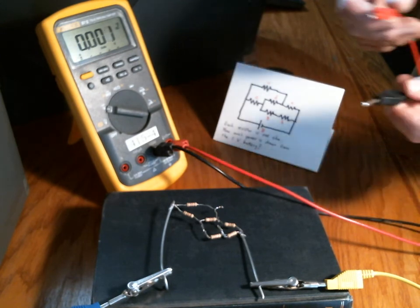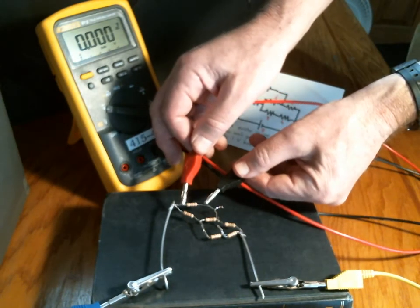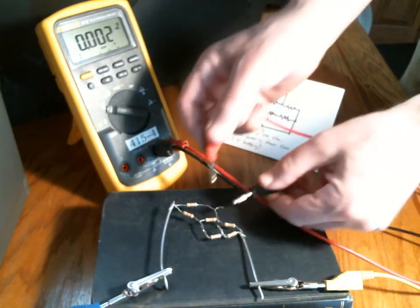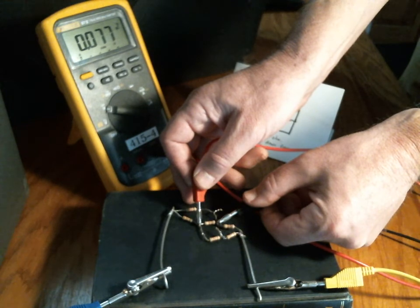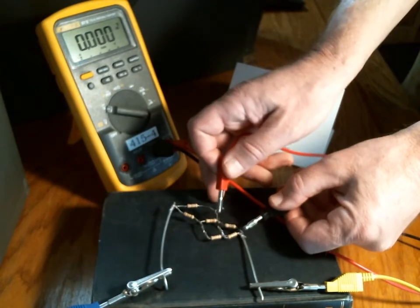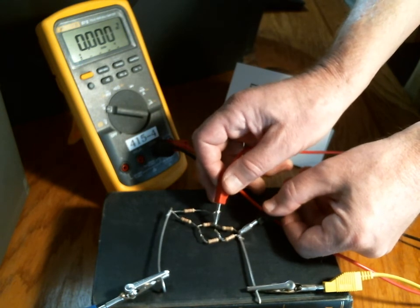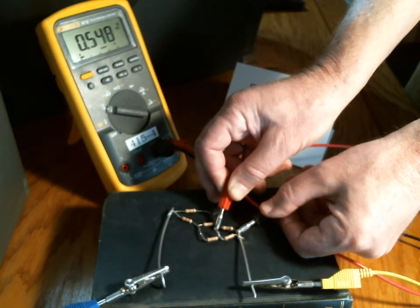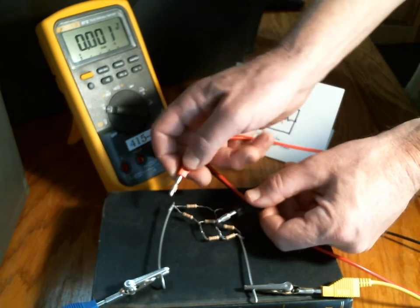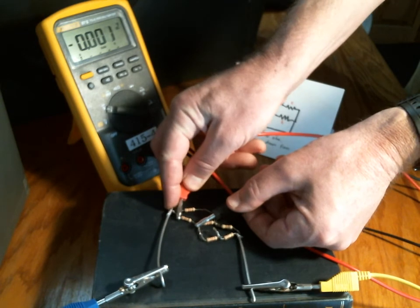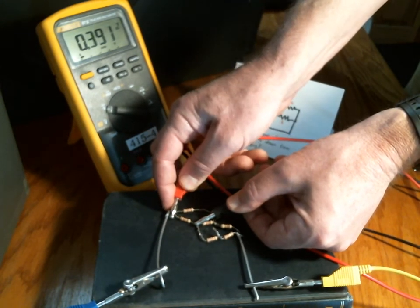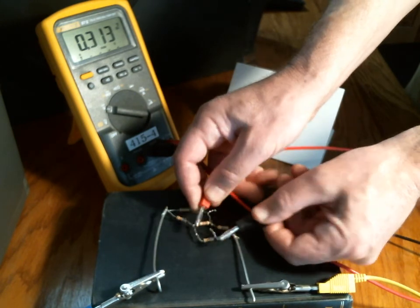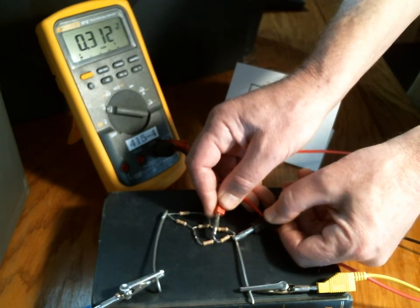So now I'm going to measure C, and I get 0.468 volts. D, 0.077 volts. E, having trouble getting good contact there, 0.548 volts. F, 0.391 volts. G, 0.313 volts. And H, 0.312 volts.